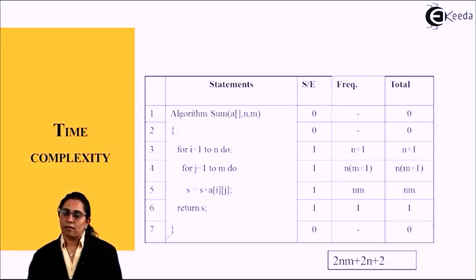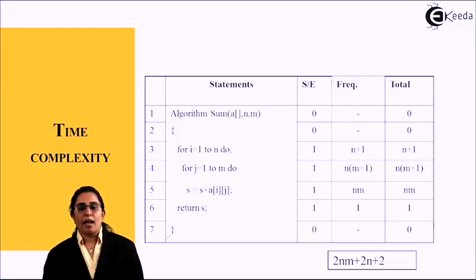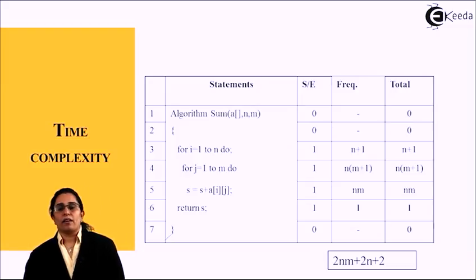Return s takes a frequency of 1 and time complexity of 1. If we add up all together, the time complexity for this code is 2nm + 2n + 2.